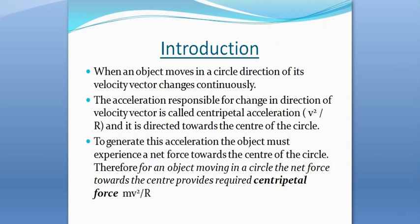Since there is a change in velocity, there must be some acceleration acting on the object. This acceleration is responsible for the change in the direction of the velocity vector, and it is called centripetal acceleration. The value of centripetal acceleration is v² / r, where v is the magnitude of the velocity and r is the radius of the circle. The direction of this acceleration is always towards the center of the circle.